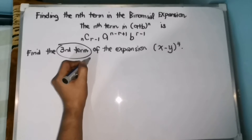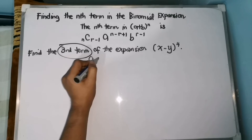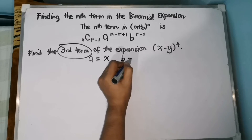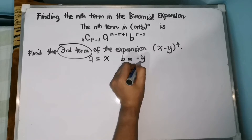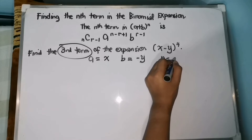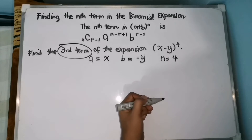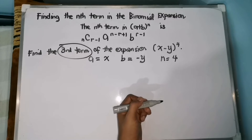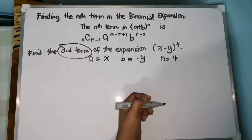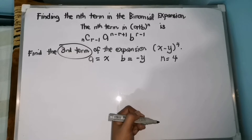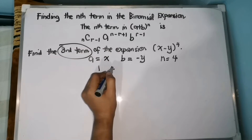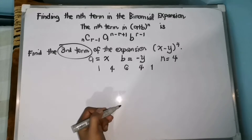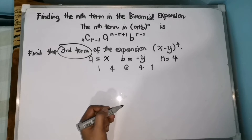So, we have here our first term x, and then our second term is negative y, and then our n is 4. So, we use the fifth row of the Pascal's Triangle. Kung hindi naalala, pwede niyong i-review sa aking last video. So, 1, 4, 6, 4, 1 — ito yung mga coefficient na gagamitin natin.